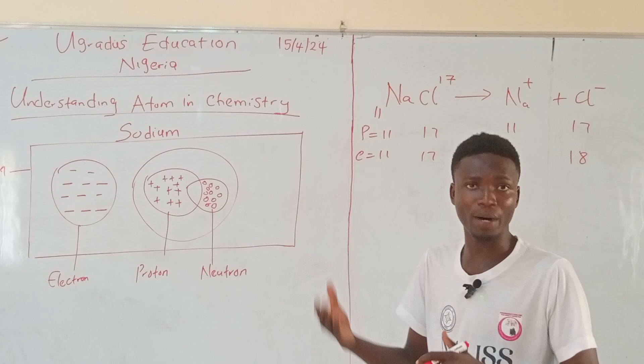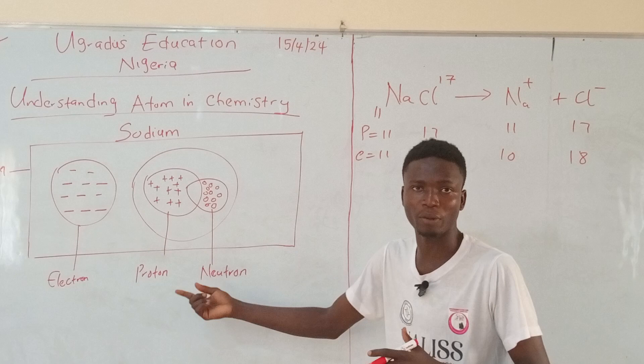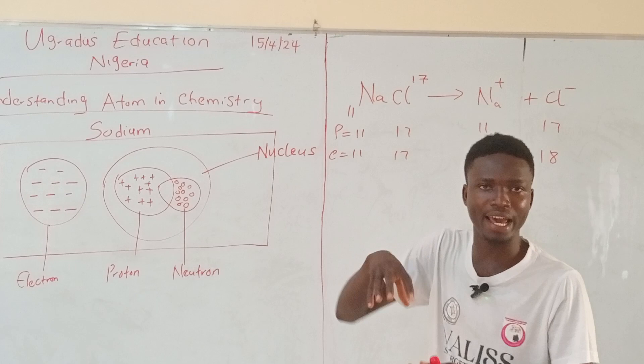These three subatomic particles are the electron, the proton, and the neutron. You will notice that two of these three subatomic particles are inside another sac inside the atom, and this sac is usually called the nucleus.